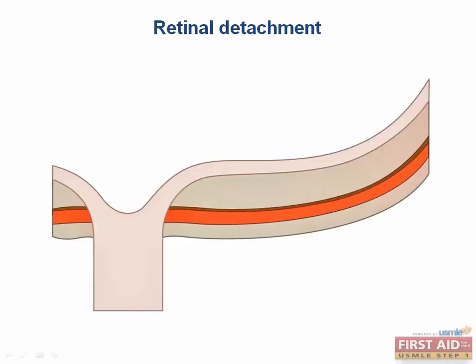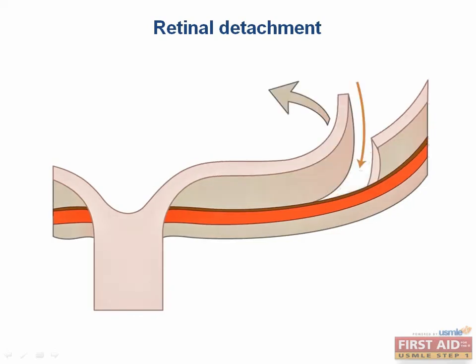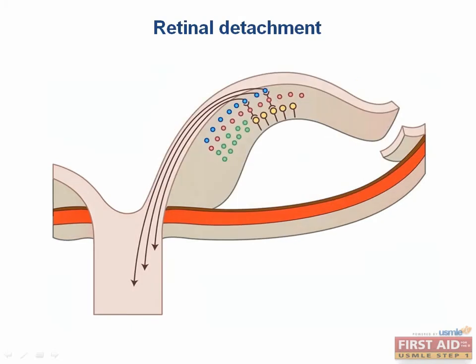Retinal detachment is a separation of the retina from its supporting layers. It can occur without a cause but is associated with trauma to the eye, previous eye surgery, and diabetes.